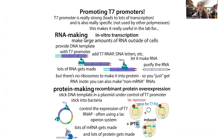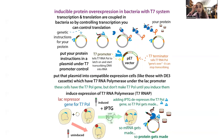You can also use T7 for recombinant protein overexpression. In this case, it happens in bacteria — you get the bacteria to do the transcription and translation. In bacteria, transcription and translation are coupled; they don't have a nucleus where DNA is held and messenger RNA gets shipped to the cytoplasm. It all happens in the same place. So if you can get that messenger RNA transcribed, it'll also get translated inside those cells.